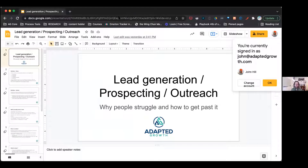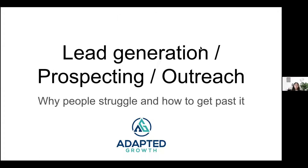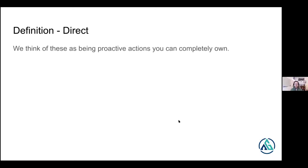Prospecting, lead gen, and outreach — there's a lot that gets misconstrued here, so let's dive in. In the way that we talk about it with our clients, there are two main categories: direct outreach prospecting and lead gen, and then there's indirect prospecting, outreach, and lead gen. We kind of put all three together because the goal is to bring in new opportunities. Some people call those leads, some call those prospects — it's largely interchangeable — but we dump them into two main categories: direct and indirect.